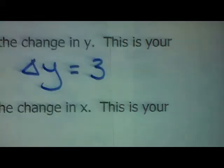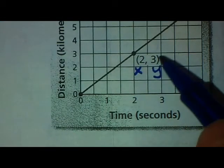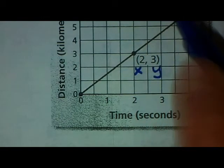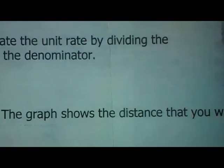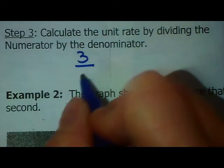The next thing you need to do is find your change in x. Now I need to start with the same ordered pair that I started with. I'm going from two to four on my x values. From two to four is up two, so change in x is two. To calculate our unit rate, all we're going to do is take our change in y, which was three, and divide that by our change in x, which is two.